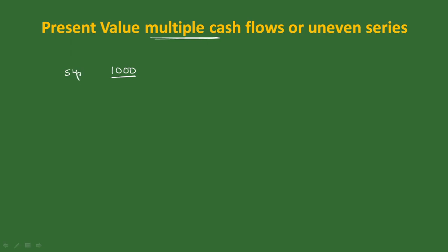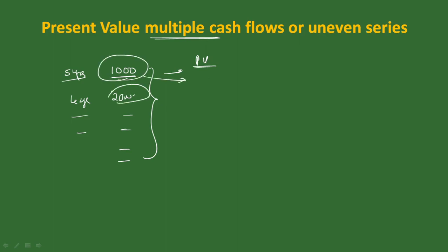After 5 years you receive 1,000 rupees, after 4 years 2,000 rupees. We will receive the present value. In this video we will make a present value calculation — each amount is a present value calculation. This is the total amount; we will get the present value of multiple cash flows. It's very simple.